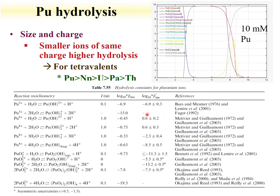Data for plutonium hydrolysis studies are available, and the hydrolysis constants are listed. For different plutonium oxidation states, a CHESS calculation is shown. Basically, plutonium behaves like other metal ions, where tetravalent species form the strongest hydrolysis complexes. For the tetravalent state, plutonium forms very strong hydrolysis complexes.